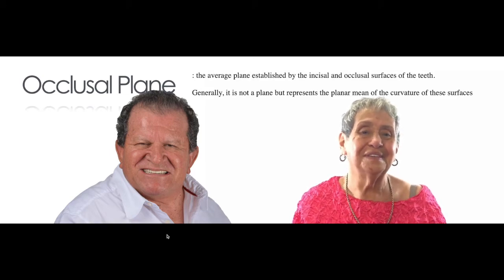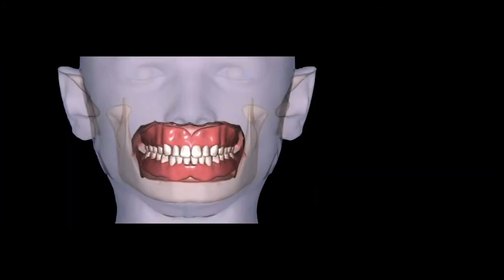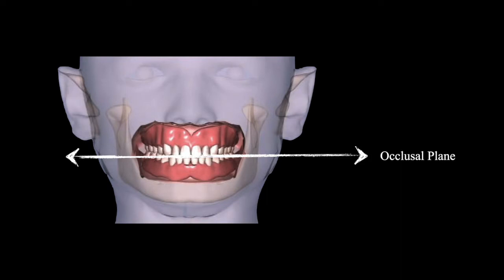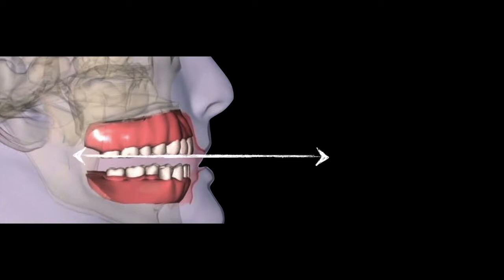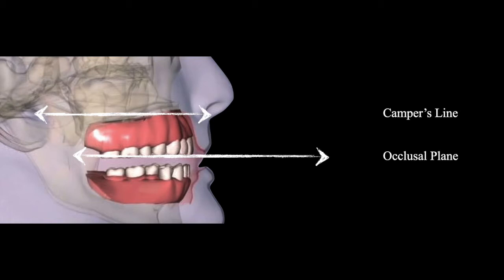What are the references to make a correct occlusal plane? In the frontal view, the reference for the occlusal plane is the interpupillary line, connecting the two pupils. The occlusal plane should be parallel to the interpupillary line. The second reference in the sagittal plane is that the occlusal plane should be parallel to Camper's line, also known as the ala-tragus line.